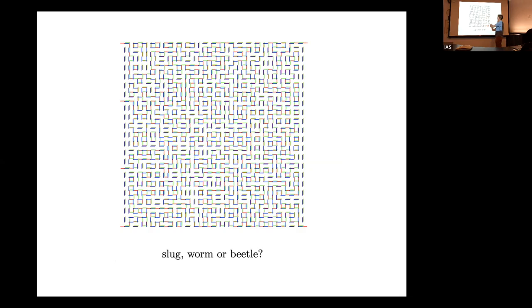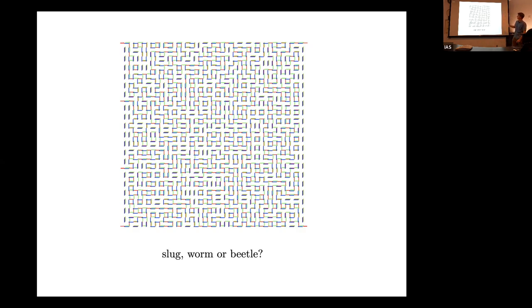Here's a graph — just a square n-by-n grid. I took three different perfect matchings of the square grid: a blue one, a green one, and a red one. I just chose them independently and drew them on top of each other. For these boundary conditions you see a very complicated mess, but it turns out there are three different types of configurations that can happen, which I call slug, worm, or beetle.